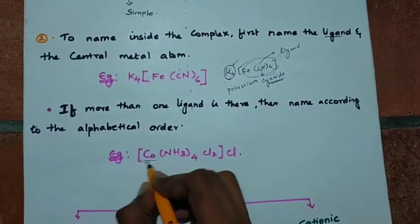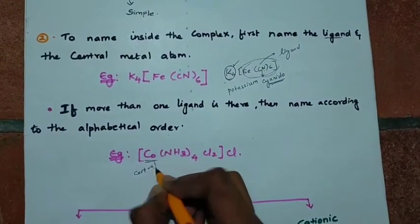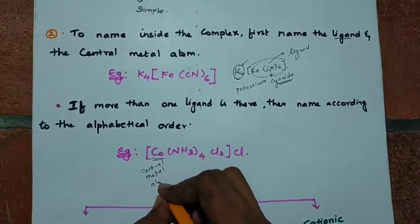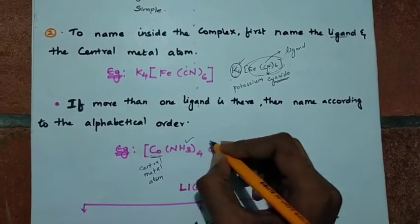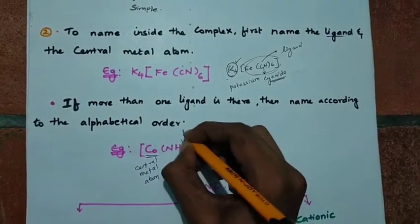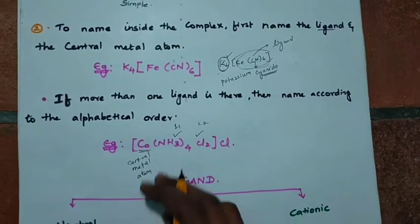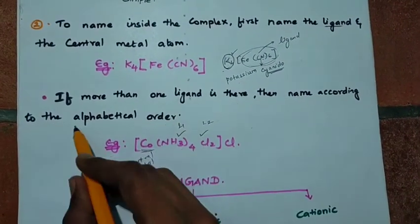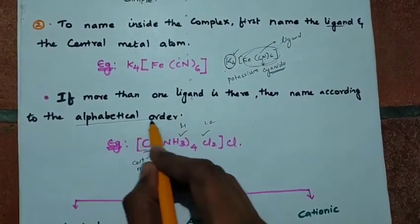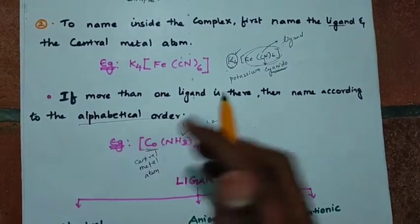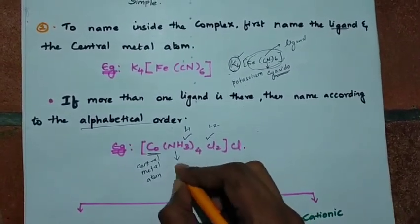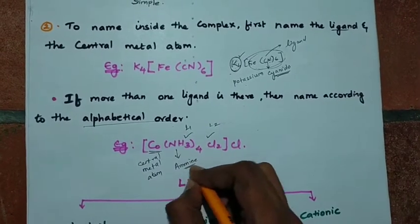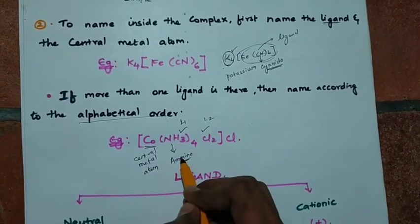CO is the central metal ion or atom. The ligands around it — you have to name them according to alphabetical order. Alphabetical order for the ligand names. So NH3 is named 'amine'. That is the rule for naming ligands alphabetically inside the complex.